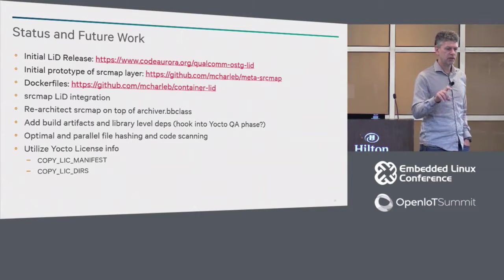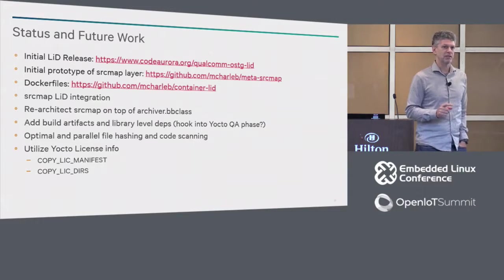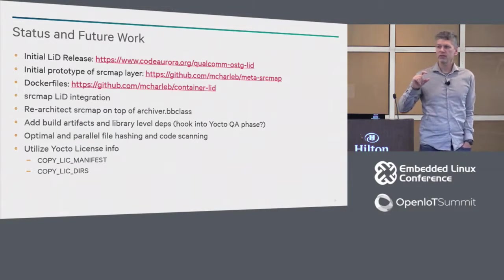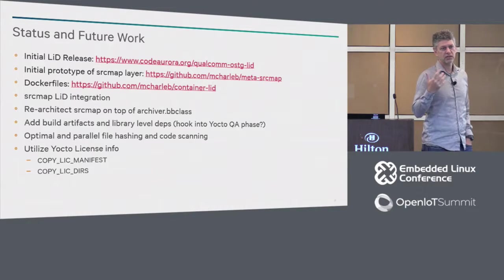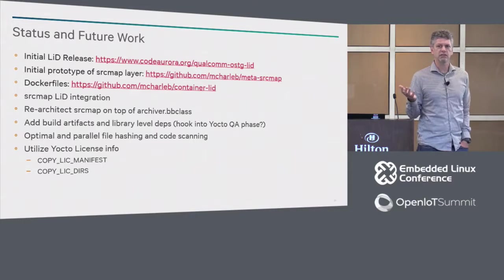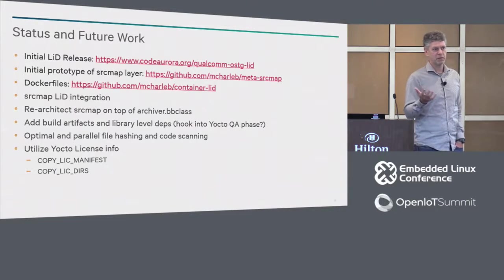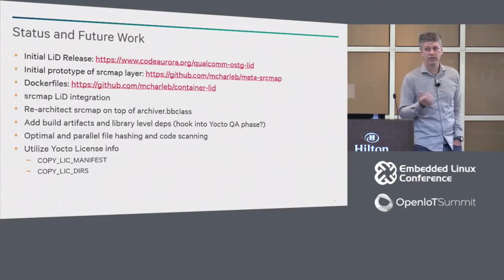I'm looking at re-architecting it and have already started to put it on top of the archiver BB class so I can take the stored code. Right now I'm creating a copy of the archiver BB class. The problem is I can't actually figure out what the license of the archiver BB class is because the license information for Yocto is very unclear. It says some files with metadata have an MIT license and other things have a GPL license, but it doesn't clarify what metadata is. I think they mean that BB files and BB classes are metadata, but it's very unclear.